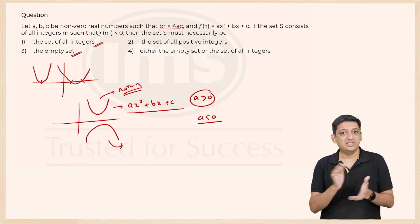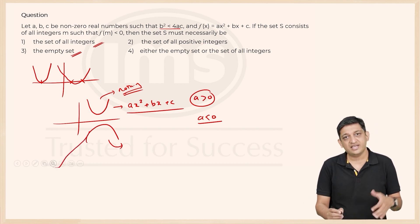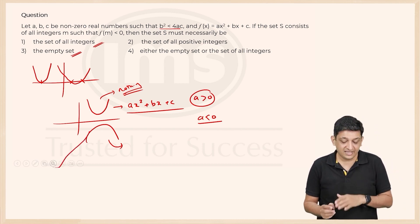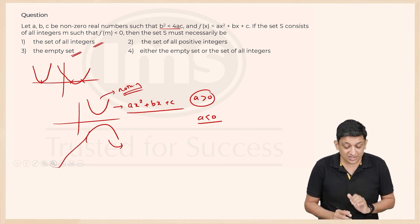Now we are not saying all positive integers because it can go this way as well and it can give you negative integers as well in the second case. So the answer has to be option 4.